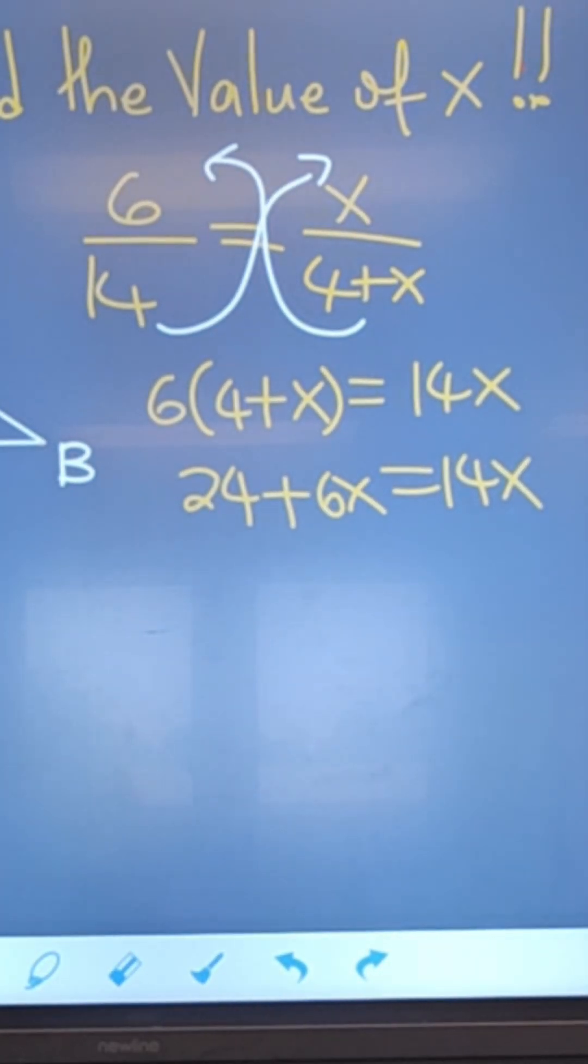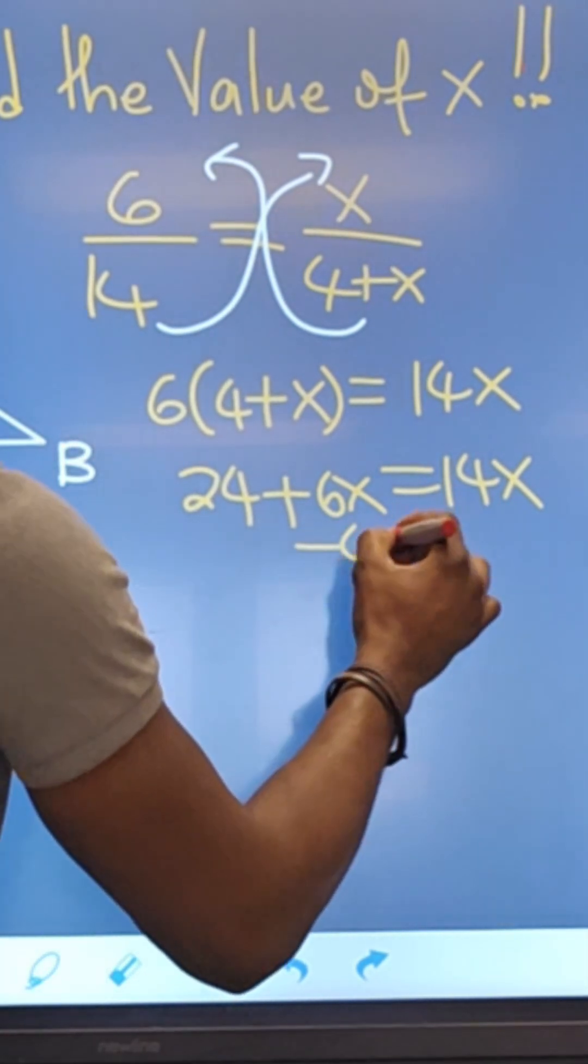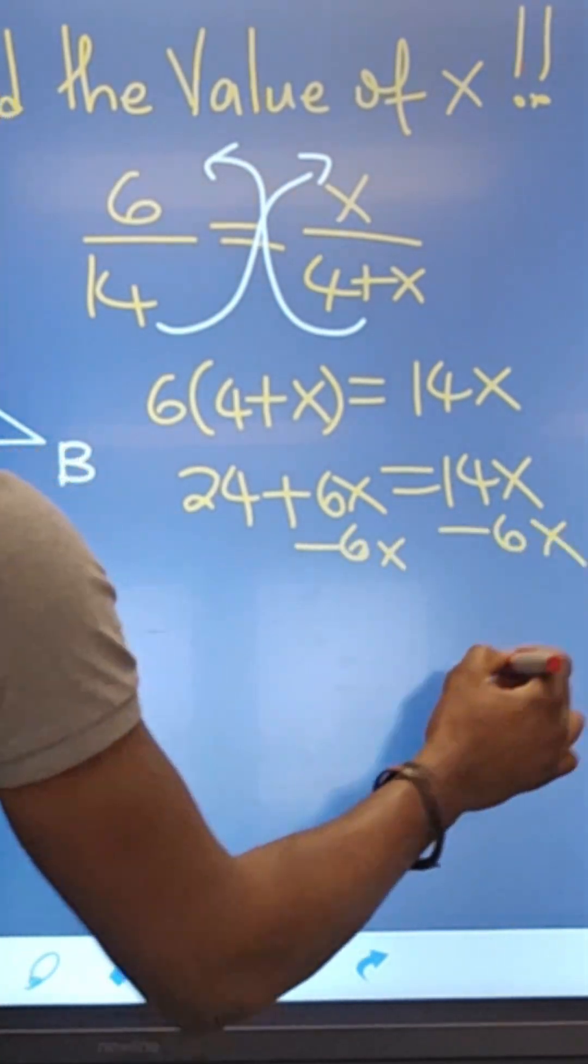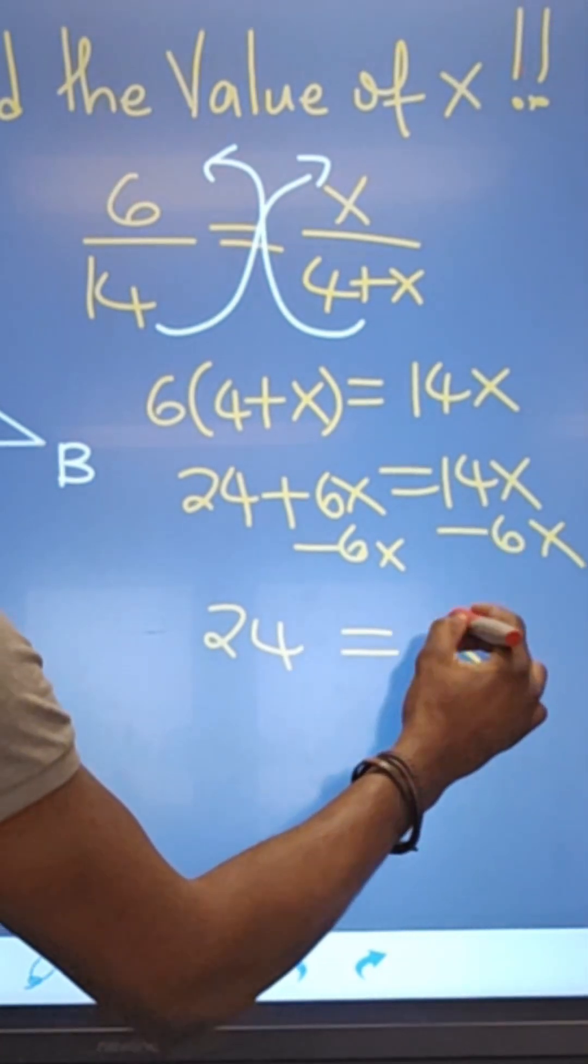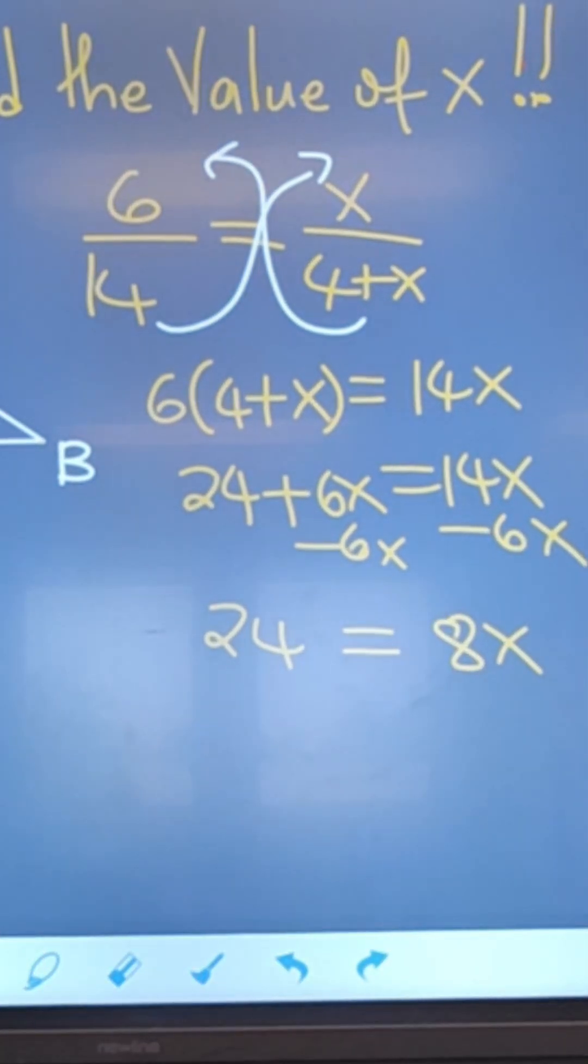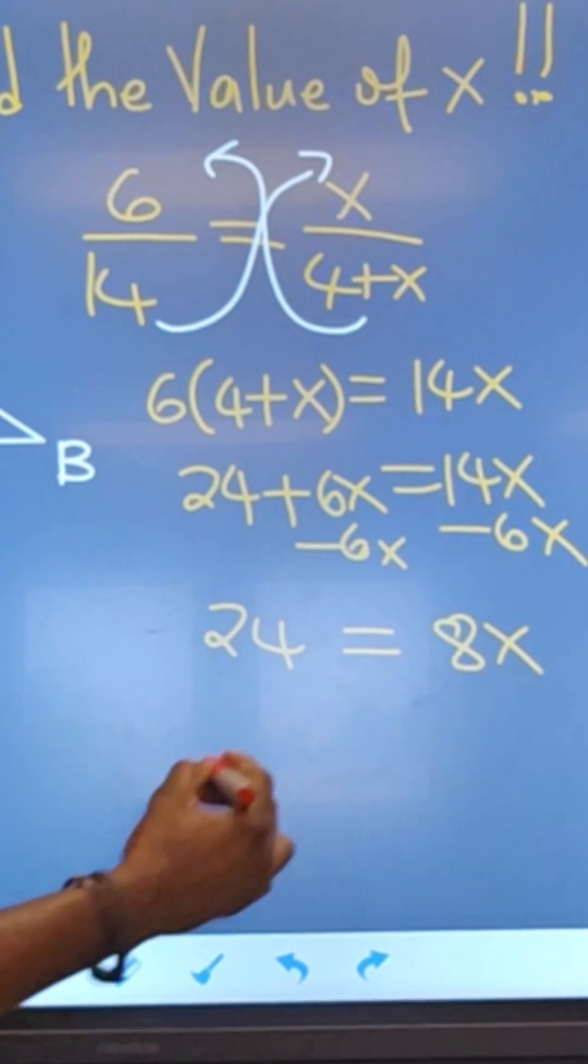Let us gather our X's on one side, so I'm gonna subtract 6X from both sides, and we're looking at 24 is equal to 8X.